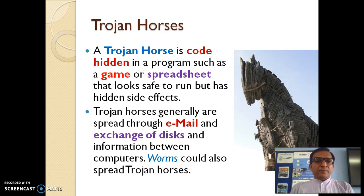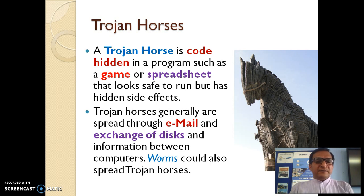Next are Trojan horses. A Trojan horse is code hidden in a program — such as a game, spreadsheet, or document — that looks safe to run but has hidden side effects. They are generally spread through emails and exchange of disks, pen drives, or information between computers.